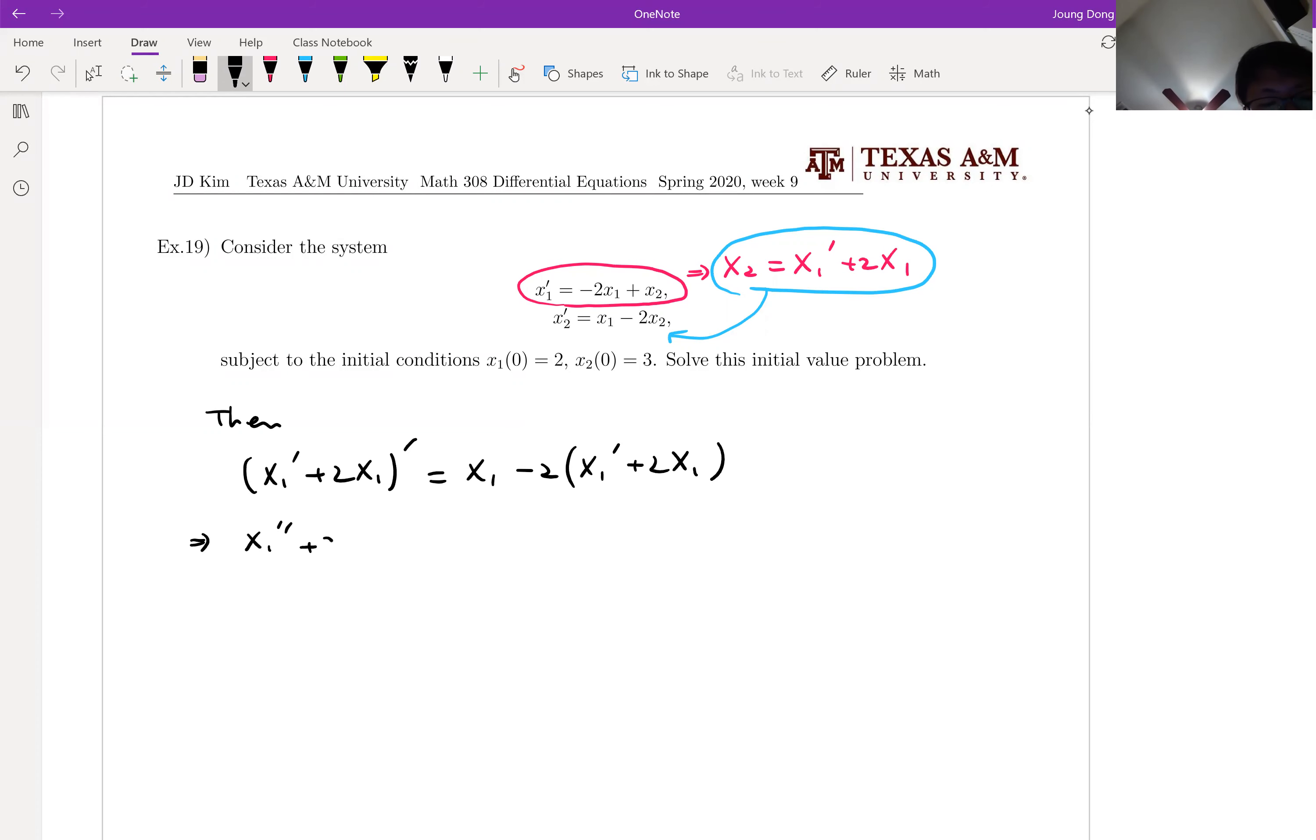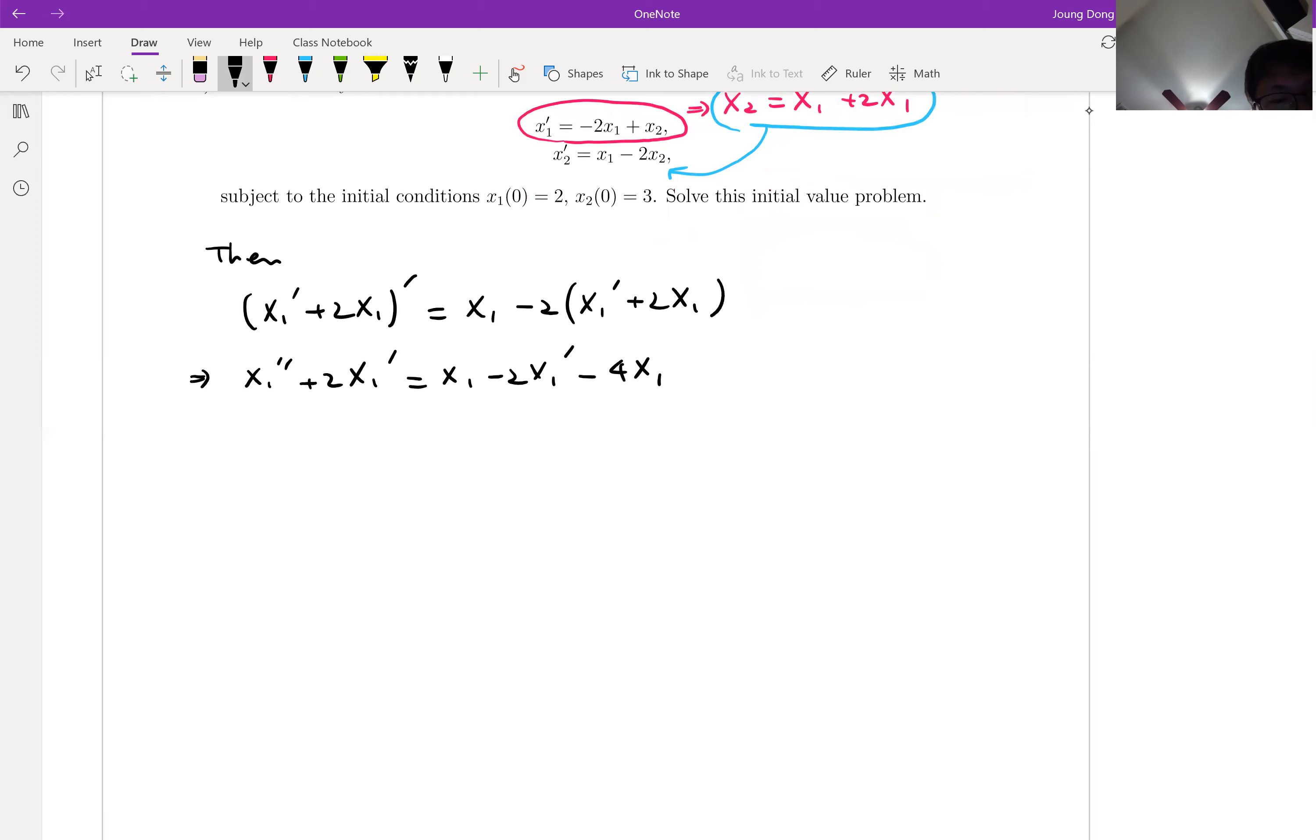x1 double prime plus 2x1 prime plus 2x1 prime minus 4x1. Let me move everything to the left-hand side. Then x1 double prime plus 4x1 prime and plus 3x1 equal to 0. Look at that. That is exactly homogeneous second-order linear differential.